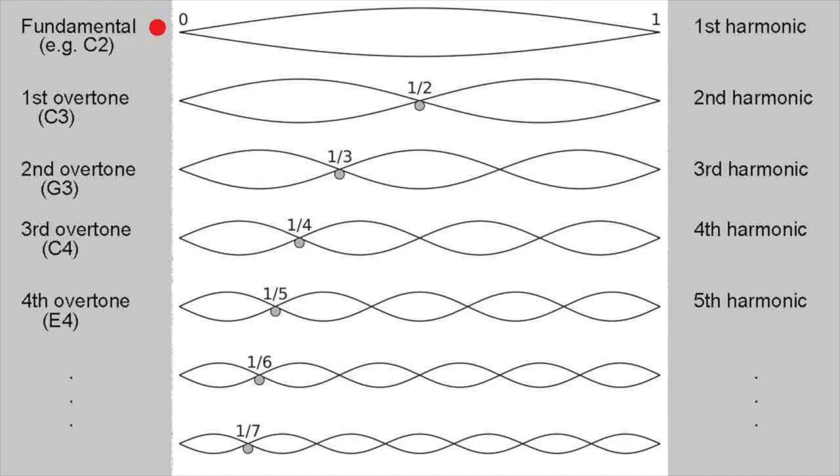If we take our fundamental note to be C2, that's the C two octaves below middle C, then the first overtone has double this frequency, and therefore is the note that's an octave higher, or C3. The second overtone is a fifth, a musical fifth, that is, up from C3, or G3.